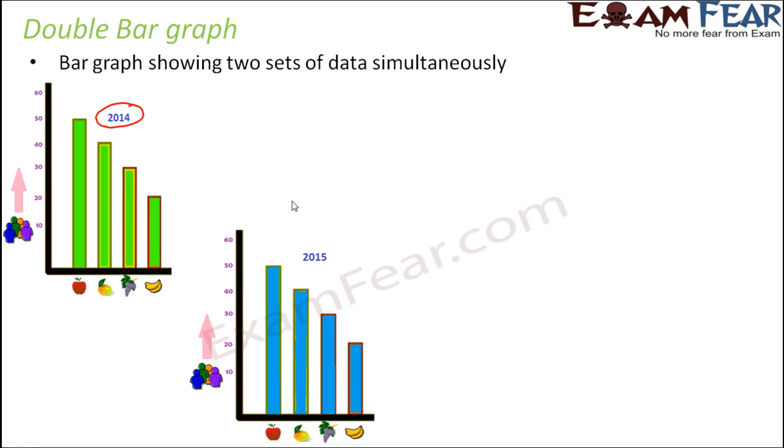Now the data will change, right? Because maybe in 2014, 50 of them liked apple. In 2015 it is also possible that only 30 of them liked apple. So the numbers would change with time.